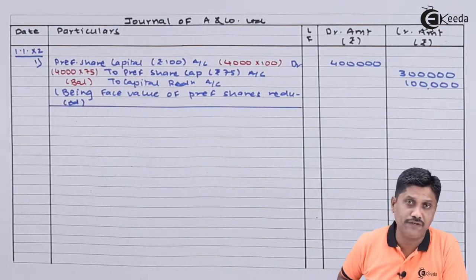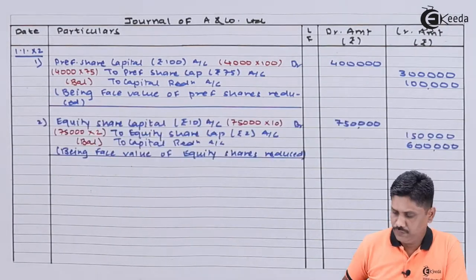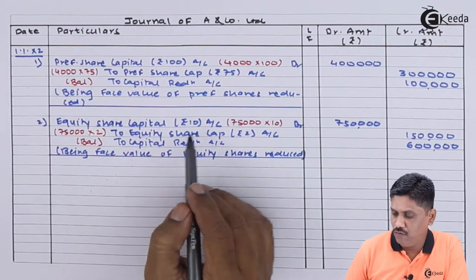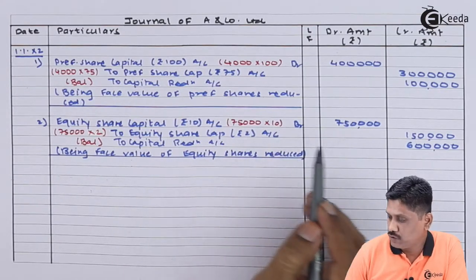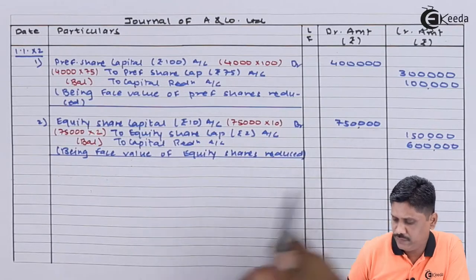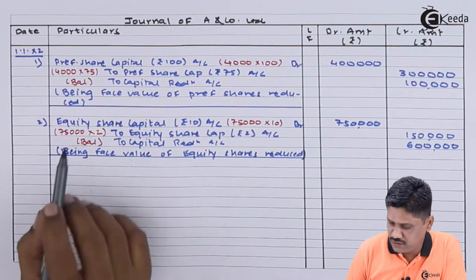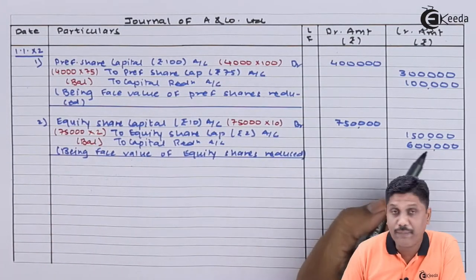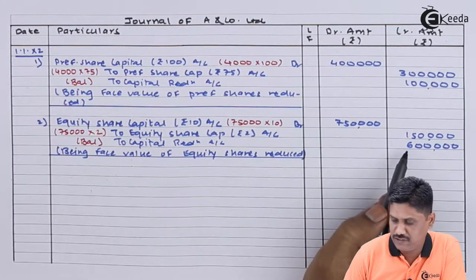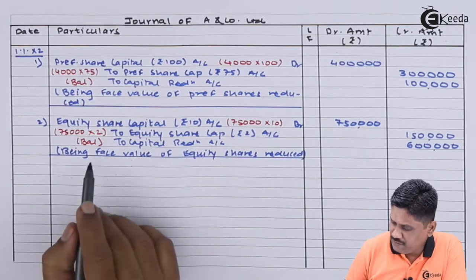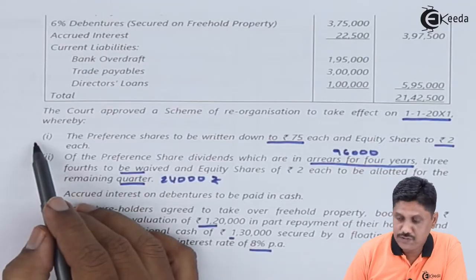Journal Entry 2: Equity share capital — earlier there were 75,000 shares of Rs.10 each, so old capital is Rs.7,50,000. It is reduced to Rs.2 each, so new capital is Rs.1,50,000 (75,000 shares × Rs.2). The benefit to the company is Rs.6,00,000, which is credited to Capital Reduction Account. Narration: Being face value of equity shares reduced. We will always assume face value has reduced and pass a gross entry: old capital account debited, new capital account credited, and the balancing amount goes to capital reduction.